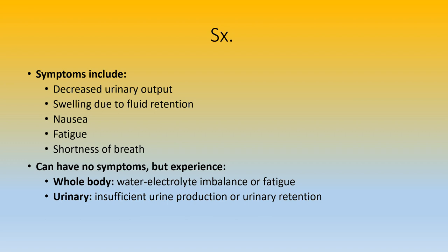A patient can also have no symptoms but experience whole-body water and electrolyte imbalance problems. Potassium, sodium, magnesium, and phosphorus are not being filtered through, so there will be an overabundance of them. There will also be insufficient urinary production — the fluid volume overload happens because the kidneys aren't able to filter, so all that fluid starts backing up.